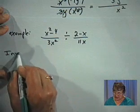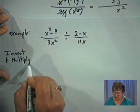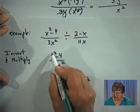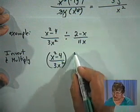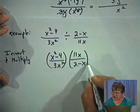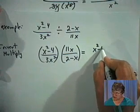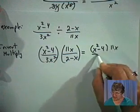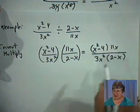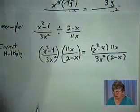This is a division problem, so we're going to need to invert and multiply first. We'll have X squared minus 4 over 3X squared, and now we invert the divisor to get 11X divided by 2 minus X. It becomes a multiplication problem: X squared minus 4 times 11X, divided by 3X squared times 2 minus X. Now we're ready to simplify and write this in lowest terms.